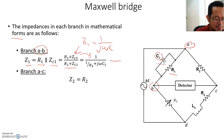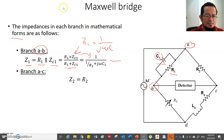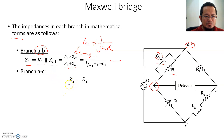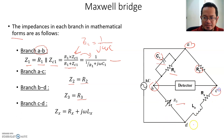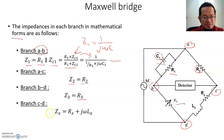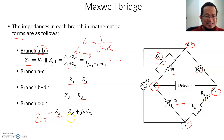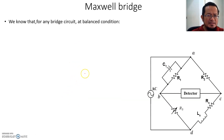For branch A to C, Z2 is simply resistor R2. For branch B to D, the impedance Z3 is the variable resistance R3. For the last branch C to D, you have the unknown impedance ZX, which consists of an inductor and resistor in series, so ZX equals RX plus jωLX.